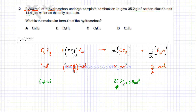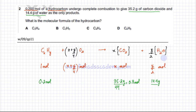Similarly, the mass of water given is 14.4 grams. Dividing by the molar mass of water — H2 is 2 and oxygen is 16, so 18 — this also comes out to 0.8 moles of water.